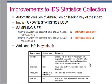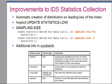We also do the equivalent of UPDATE STATISTICS LOW so that the optimizer starts using that index immediately. The third thing we have done is introduce a new parameter to the UPDATE STATISTICS statement: the sampling size parameter. This allows you to specify the minimum number of rows for the IDS server to create the distribution, as shown in the first example of the UPDATE STATISTICS statement.